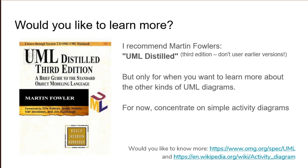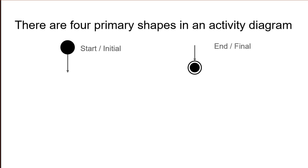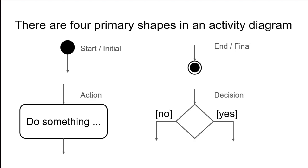So let's get started. There are four primary shapes in an activity diagram. The start, also called the initial node — nothing comes before that. The end, also called the final node — nothing comes after that. Actions that describe some action performed in the activity — usually something comes before and something else after. And decisions that describe when the flow changes — something comes before and then a decision has to be made as to what comes after.